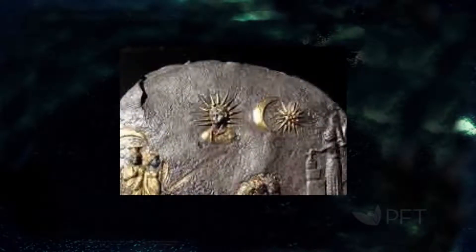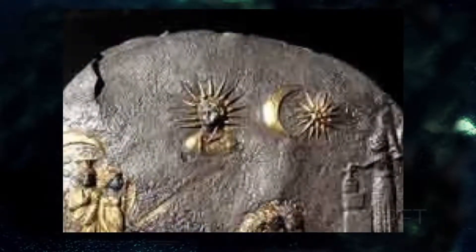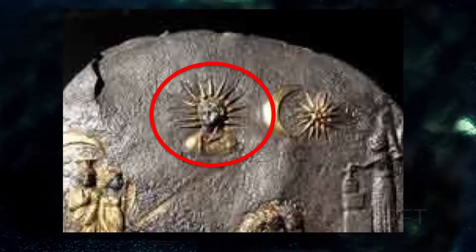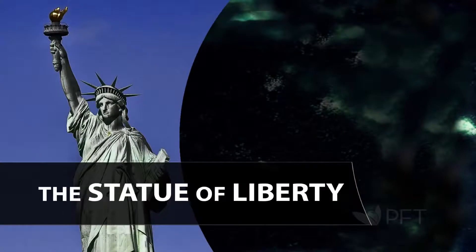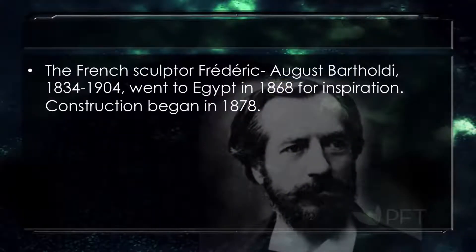But what I want to focus on is this. There's a close-up, ladies and gentlemen — what does that look like? The Statue of Liberty. So I'm going to take a little bit of a rabbit trail and get uncomfortable, and we're going to find out who Lady Liberty really is. We're going to go back to the French sculptor Frédéric Augustus Bartholdi, 1834 to 1904, who went to Egypt in 1868 for inspiration. The construction of the Statue of Liberty began in 1878.